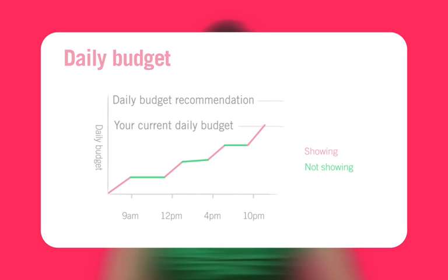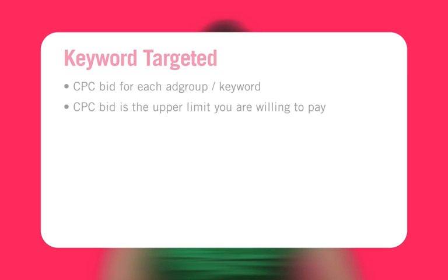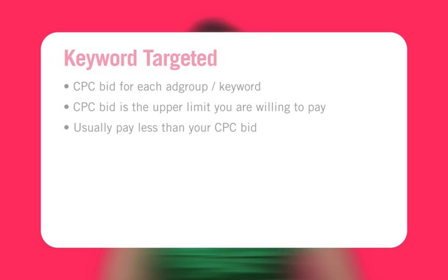There are two types of ad campaigns: keyword targeted and placement targeted. In keyword targeted campaigns, you set a cost per click bid for each ad group or keyword in your campaign. Your CPC bid is the upper limit you set on the amount you're willing to pay for a click on your ad. Your actual cost is usually less than this. It's called a bid because Google auctions the position on the page.